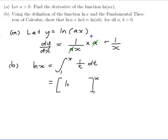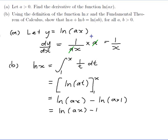Using ln(At) as the antiderivative, I evaluate from 1 to x. That gives ln(Ax) minus ln(A times 1), which equals ln(Ax) minus ln(A). So if I rearrange this formula, I get ln(Ax) minus ln(A) equals ln(x), meaning ln(A) plus ln(x) equals ln(Ax). And setting x to be equal to b, that gives us ln(A) plus ln(B) equals ln(AB), which is what we wanted to show.